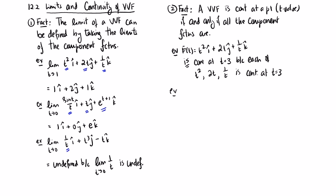Whereas, for example, g of t equals e to the ti plus t plus 1 over tj plus tangent of tk. This is not continuous at t equals 0 because 1 over t is not.